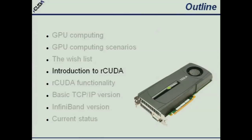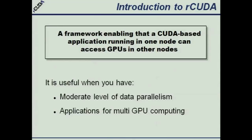From now on, all the talk will be presenting what Arcuda is and some performance results. Arcuda is a framework, a middleware, that enables running a CUDA-based application in one node while accessing the GPUs in a different node seamlessly, without having to change the application virtually at all. This will be useful when we have a moderate level of data parallelism or when we have applications that require an enormous amount of GPUs.